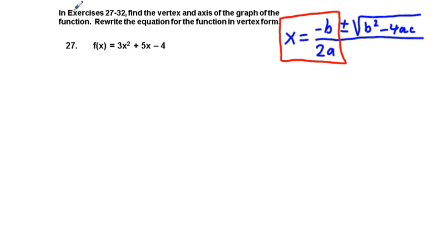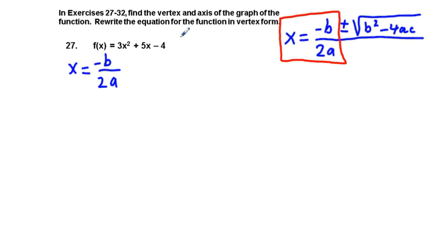x equals negative b over 2a. To find a, b, and c, we go to standard form of our quadratic expression.